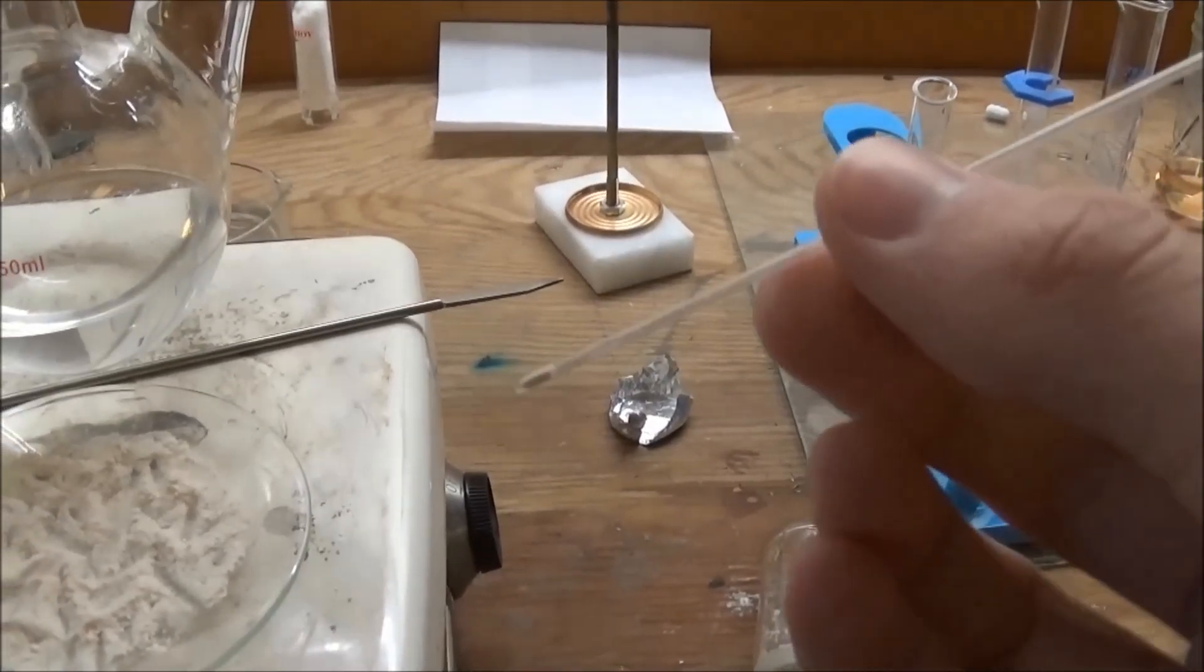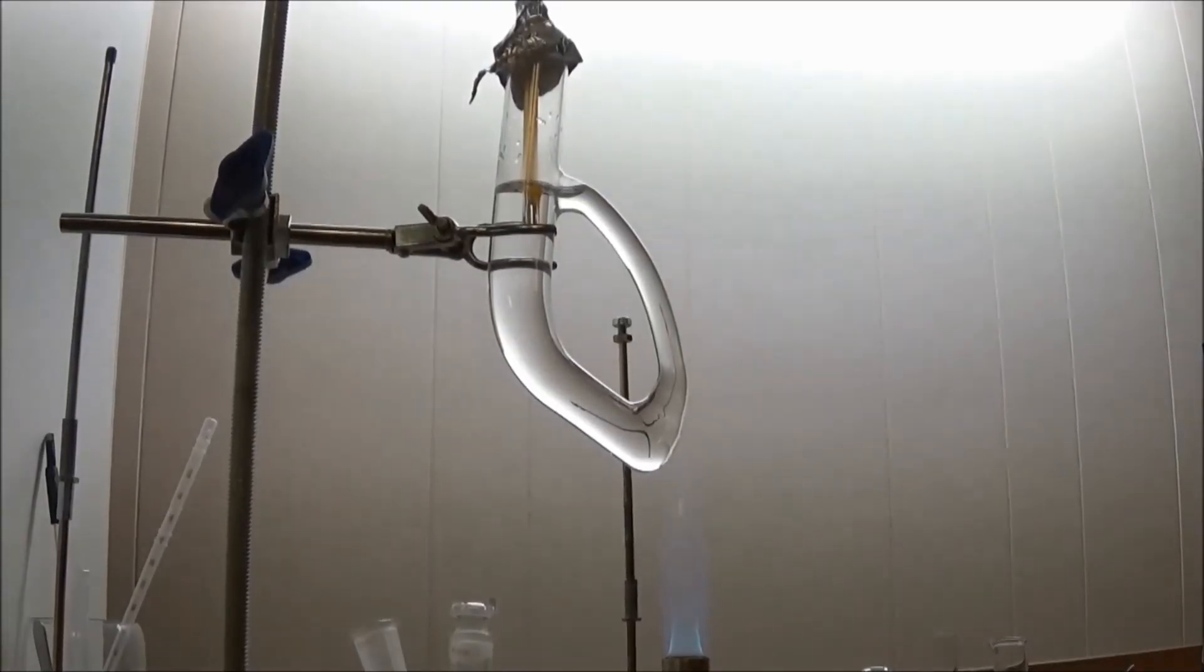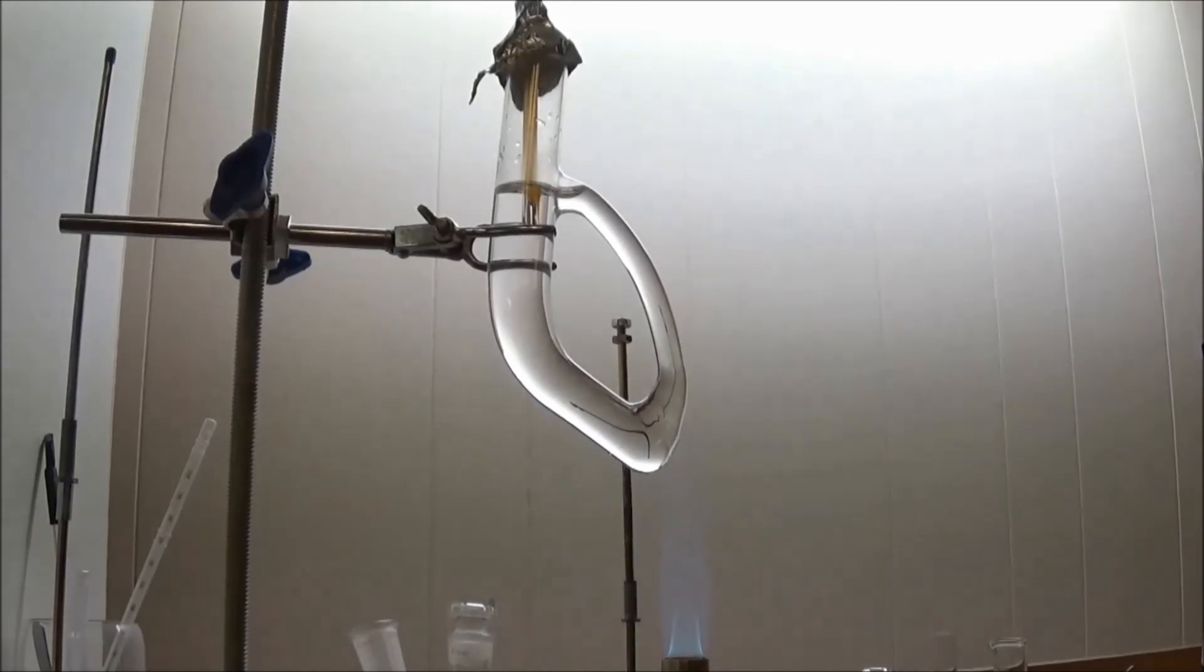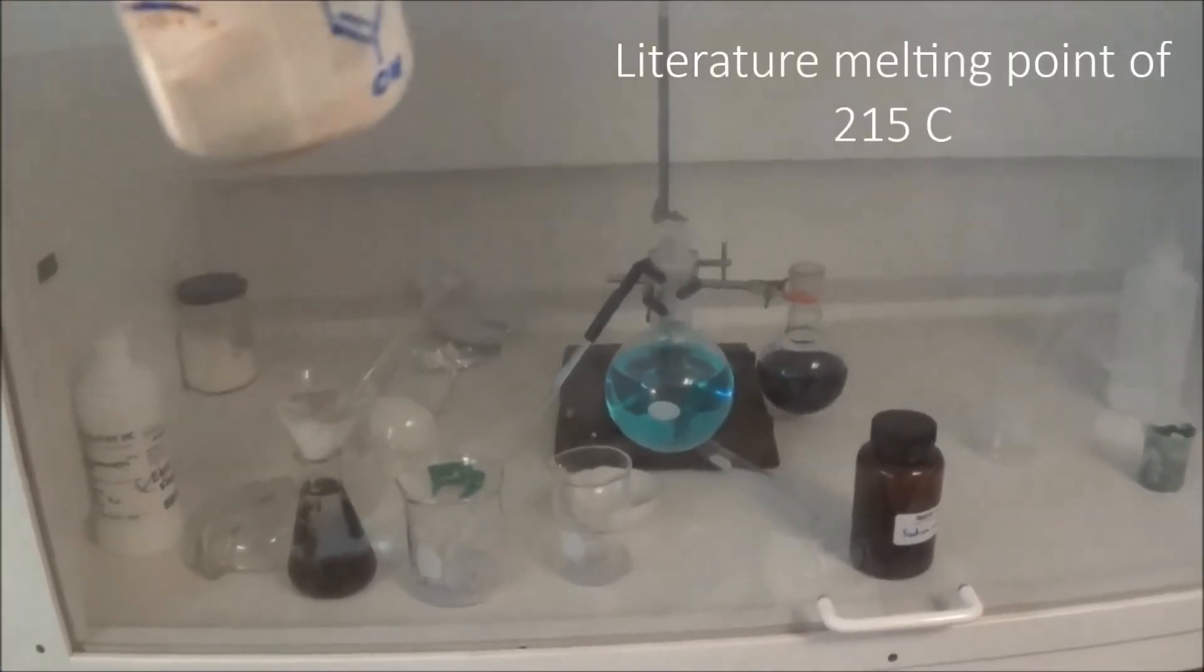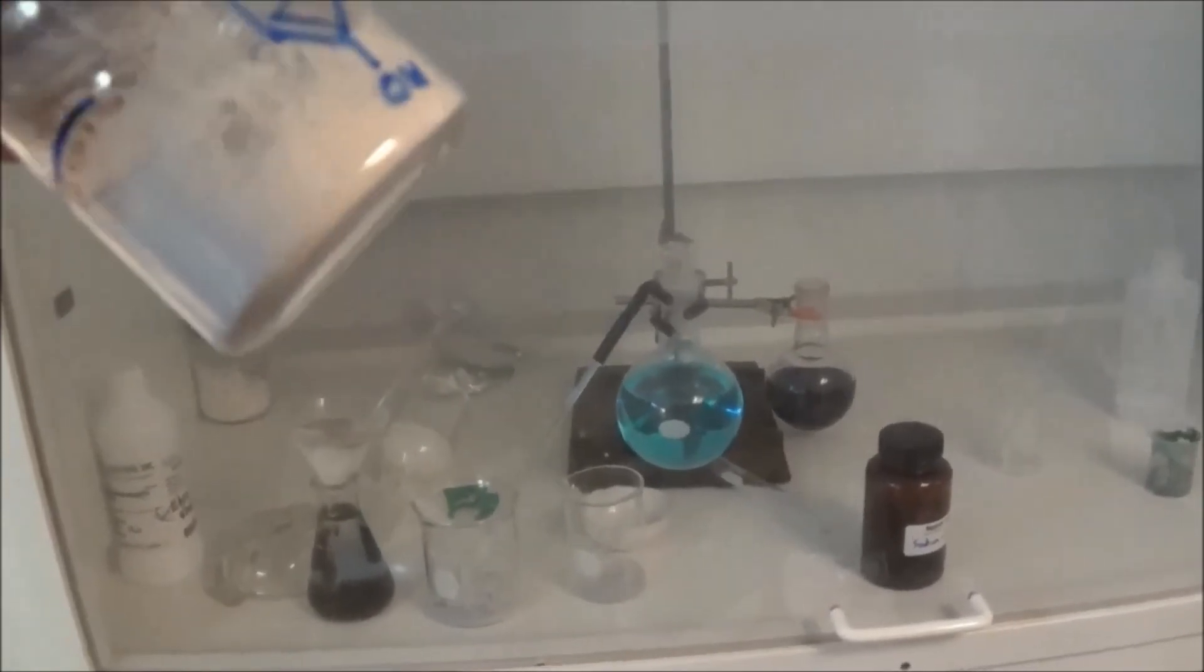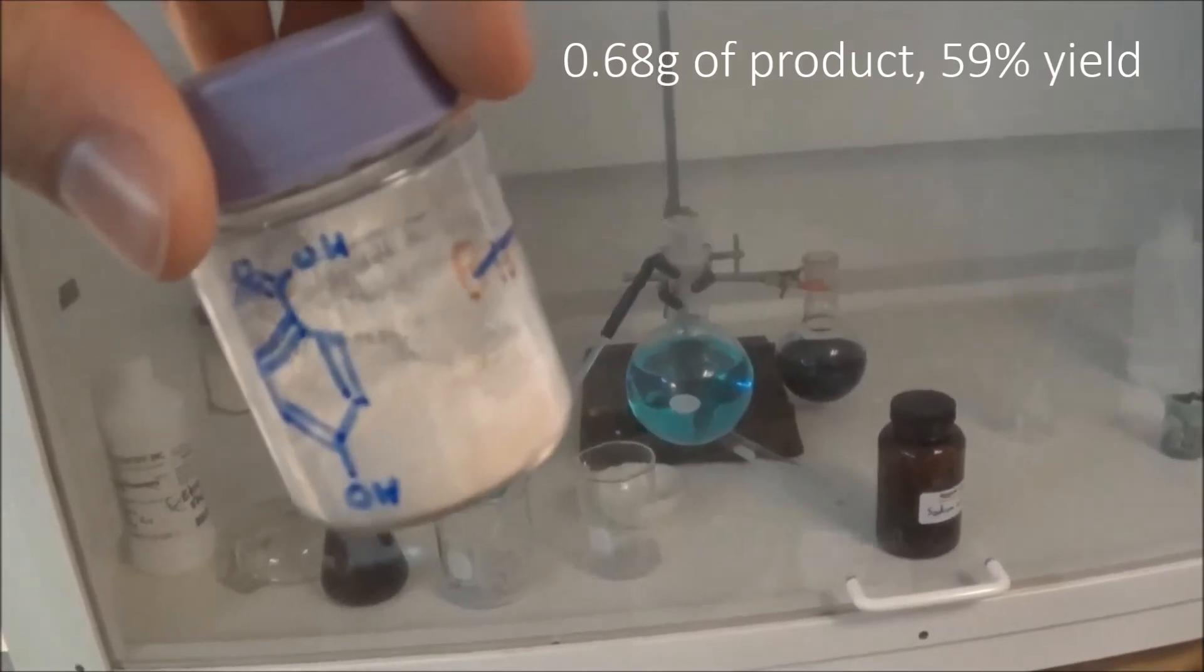I packed a bit into a capillary tube and took the melting point. I found the melting point to be about 205°C, which is a little bit low, but close enough that I can reasonably say this is 4-hydroxybenzoic acid.